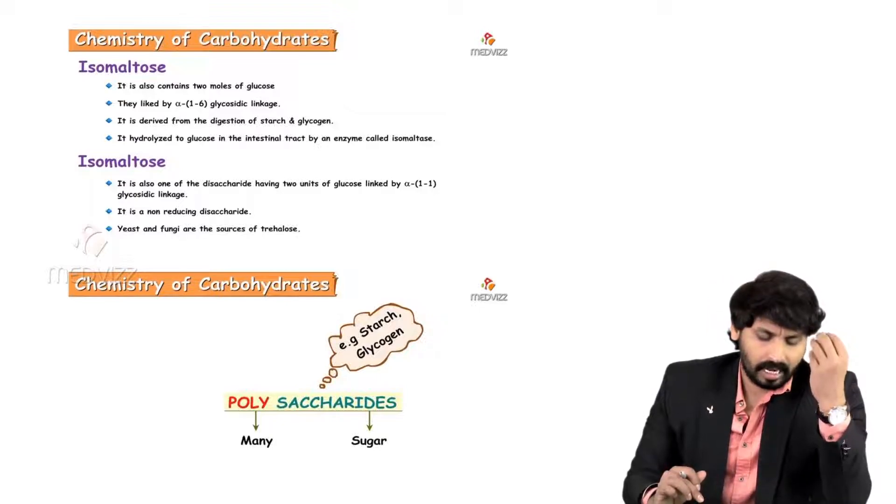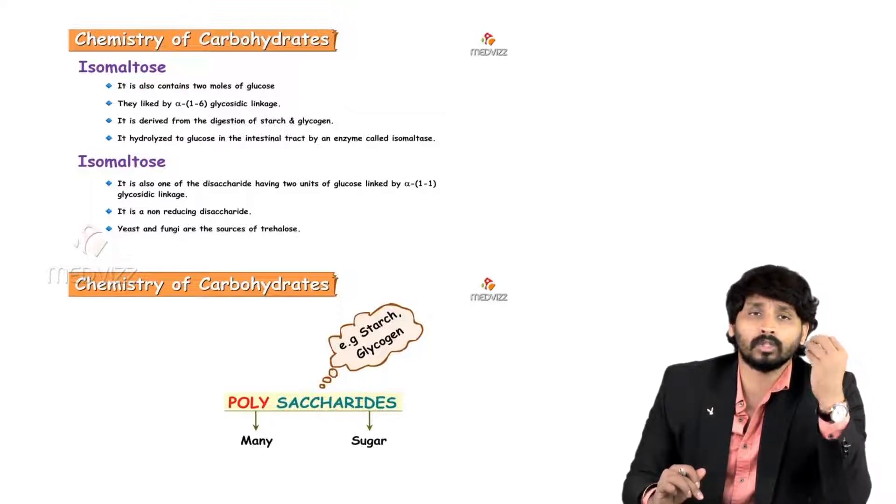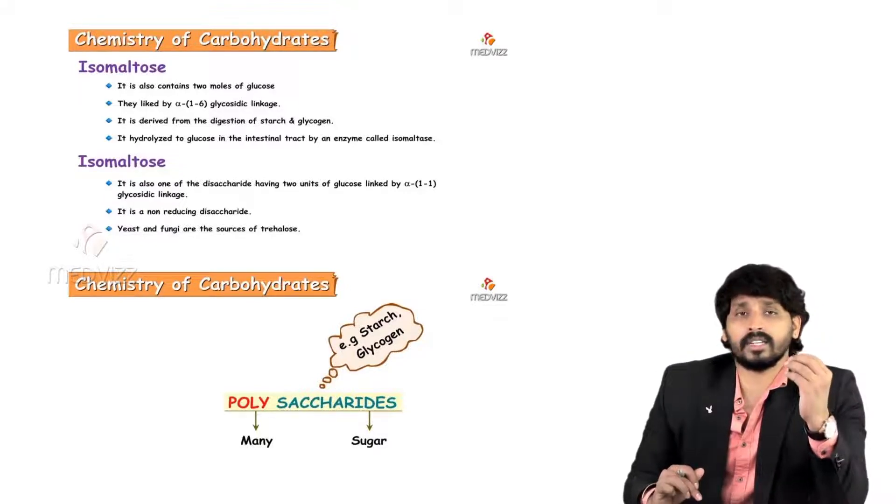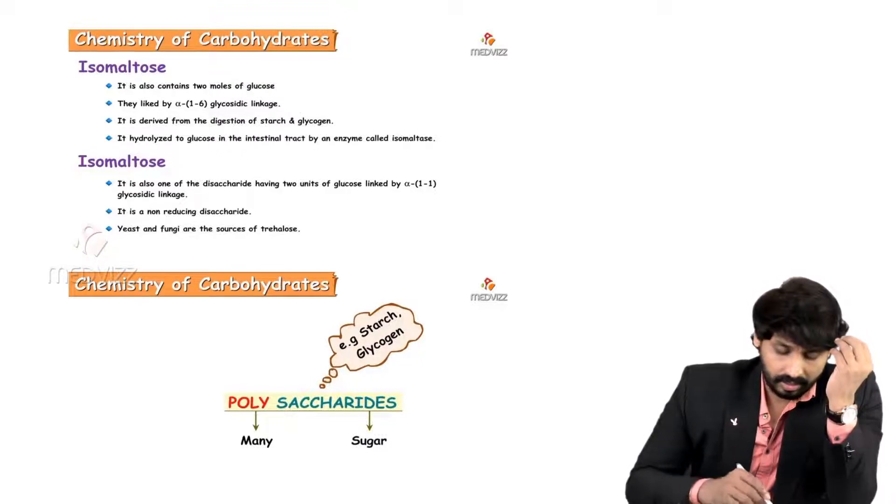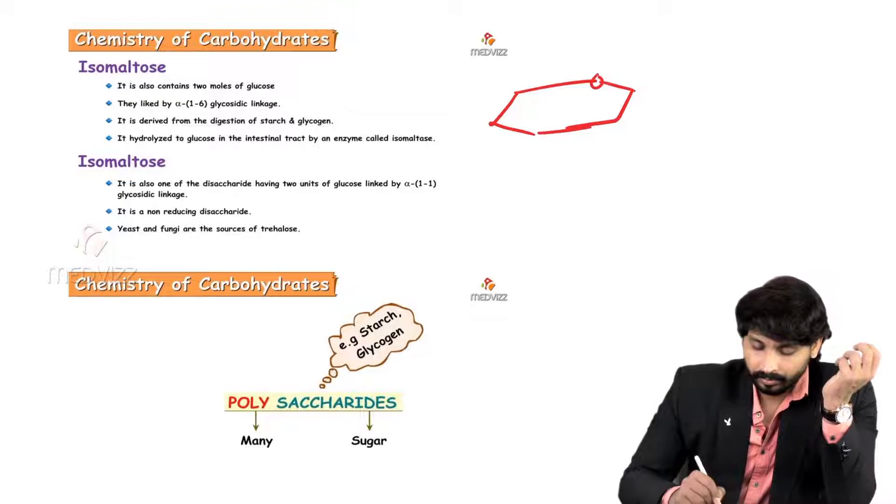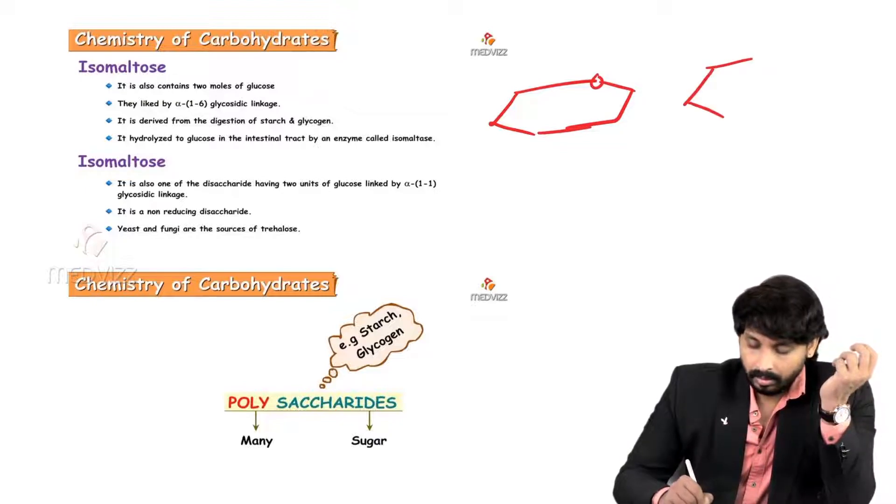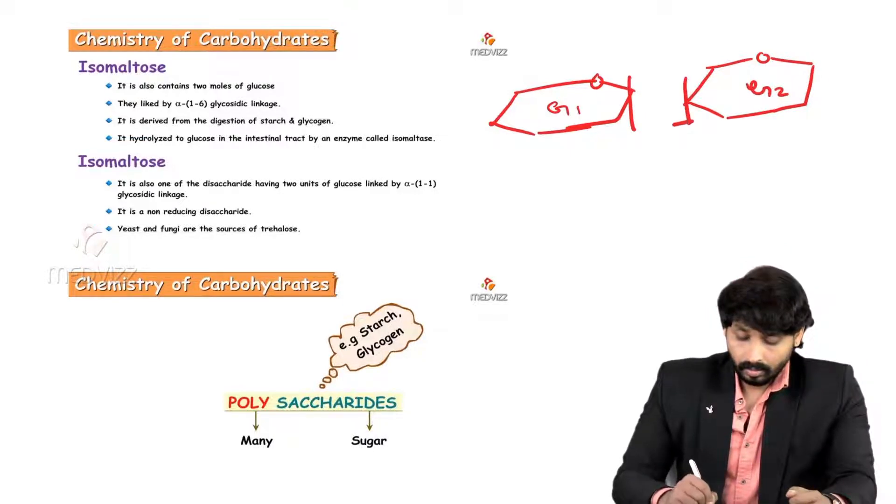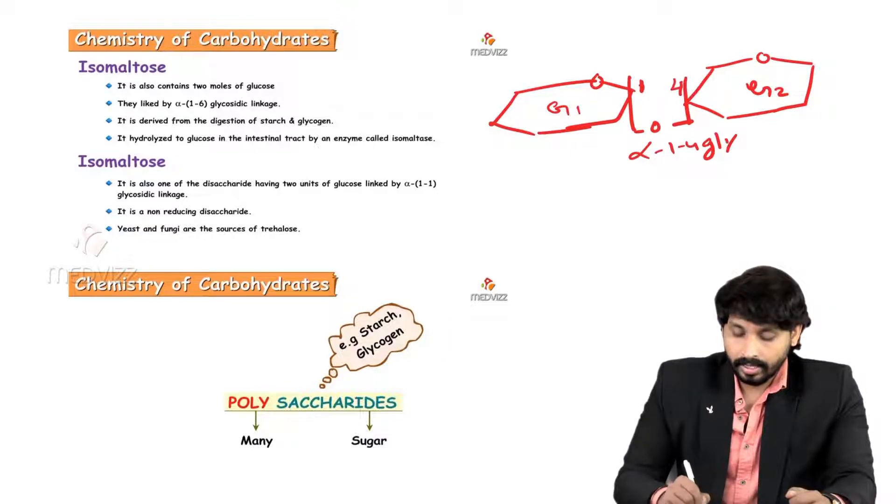Next coming to other lesser important disaccharides, they are isomaltose. Isomaltose is there which is similar to maltose but one thing there is a difference. In maltose two glucose units are there. The first carbon of first glucose and fourth carbon of second glucose both involved in alpha one four glycosidic linkage. This is in case of maltose.